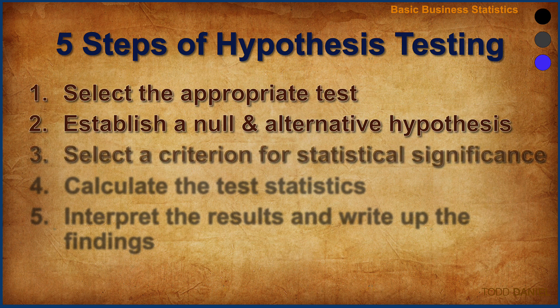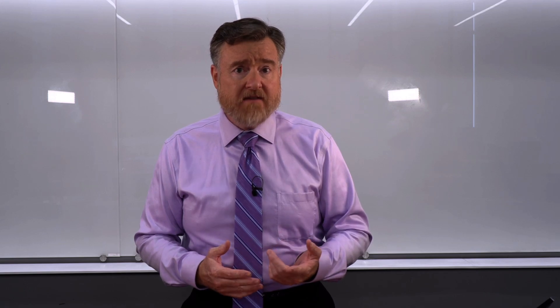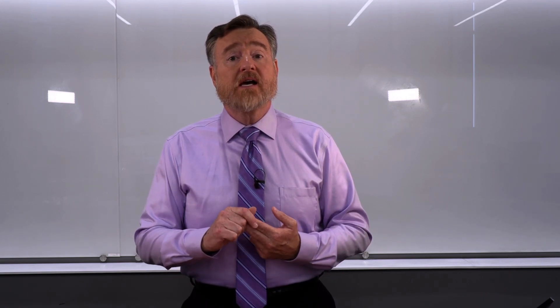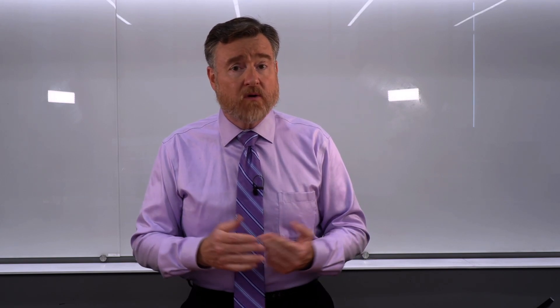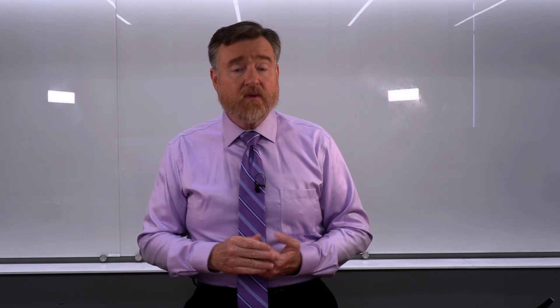Step three is to select a criterion for statistical significance — we're going to place our bets. We'll establish before we begin what level of evidence we're willing to accept for statistical significance. We can do that using p-values and probabilities, using a critical value based on degrees of freedom or looked up in a table, or we can do it using confidence intervals.